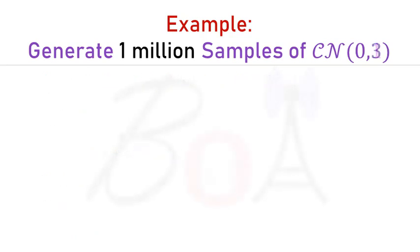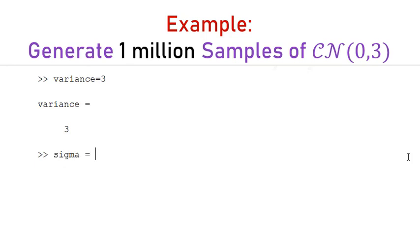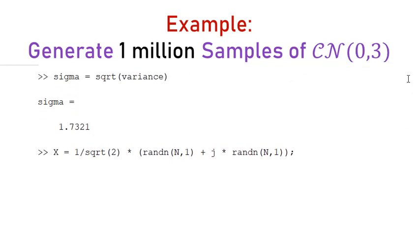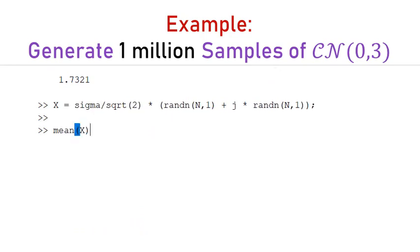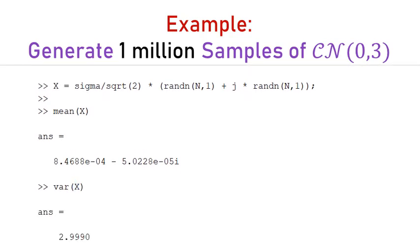Now let's generate one million samples of a complex Gaussian random variable with mean 0 and variance 3. As variance is equal to 3, sigma will be equal to the square root of the variance. Now let's generate the samples and check the mean and variance of X. You can see that the mean and variance nearly match 0 and 3 respectively.